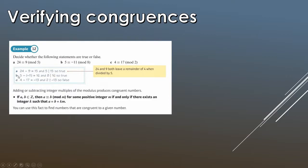For the next example, compute 5 minus (negative 11), being careful with the signs — that gives 16. Does 8 divide 16? Yes, so that congruence is true. Finally, 4 minus 17 gives negative 13. Does 2 divide negative 13? It doesn't, so that congruence is false.